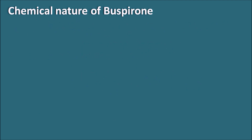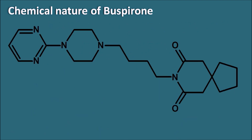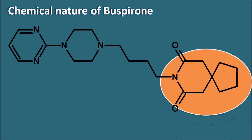First of all, let us see the chemical nature of buspirone. Buspirone is having a large chemical structure and we can observe a spiro compound in this structure. That's why we can observe the infix 'spiro' within the name buspirone. We can give the numbering to this spiro compound from the carbon adjacent to the spiro atom — that is the atom which is responsible for the fusing of the two ring systems.